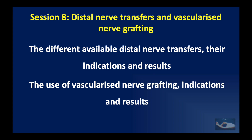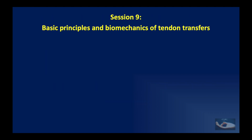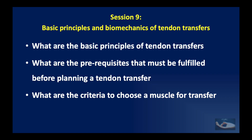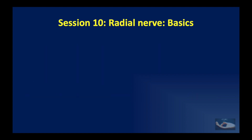Session 8 will be on distal nerve transfers and vascularized nerve grafting, covering the different available distant nerve transfers, their indications and results, and the use and indications for vascularized nerve grafting. Session 9 will be on the basic principles and biomechanics of tendon transfers, dealing with the prerequisites that must be fulfilled before planning a tendon transfer and the criteria to choose a muscle for transfer. After that session, we come to the specifics of the individual nerves.